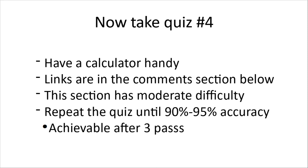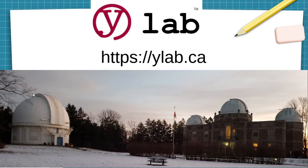Take quiz 4 — have a calculator handy if you find the calculations difficult. Your test administrator will usually allow a calculator but may not allow a smartphone to prevent cheating, so bring a basic calculator. The links are in the comments section below. This section has moderate difficulty — repeat the quiz until you get 90 to 95% accuracy, achievable after three passes. We're YLAB, the Makerspace at the David Dunlap Observatory. Get to your quiz — let's go!